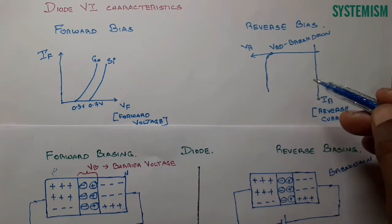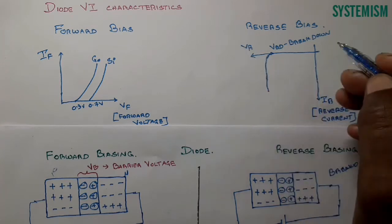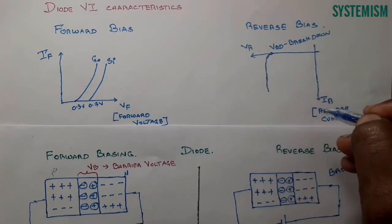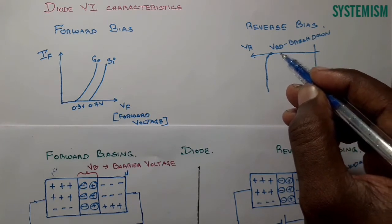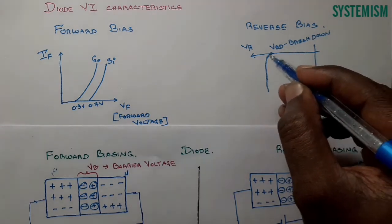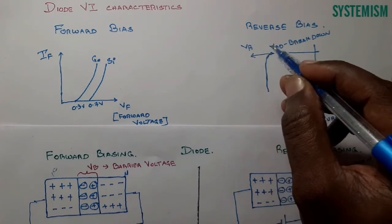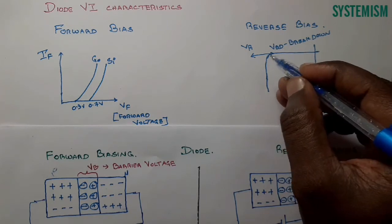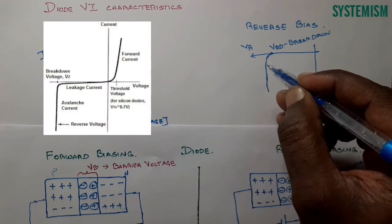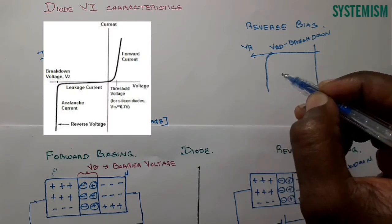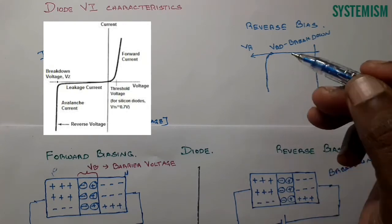For the reverse bias diode, the graph is drawn in the reverse direction. As we increase the reverse voltage, up to a particular point no current flows. But when the reverse voltage exceeds the breakdown voltage, the diode breaks down, the current increases drastically — this damages the diode.